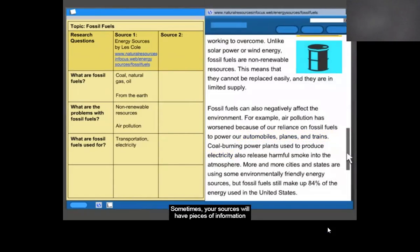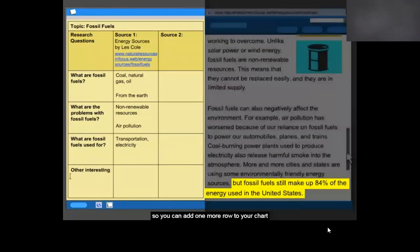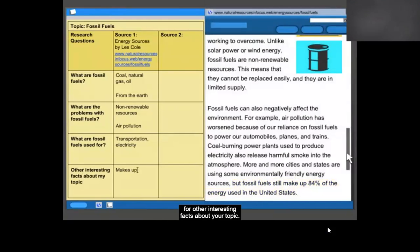Sometimes your sources will have pieces of information that seem important, but don't quite answer any of your research questions. That information could turn out to be useful later on, so you can add one more row to your chart for other interesting facts about your topic.